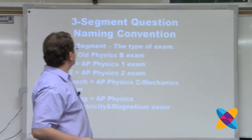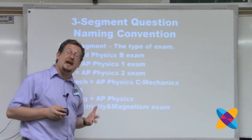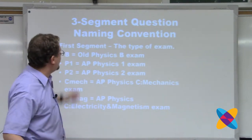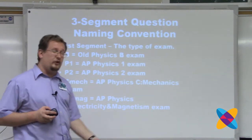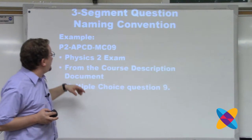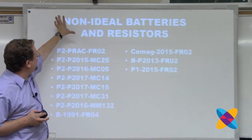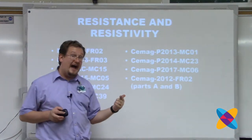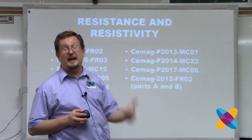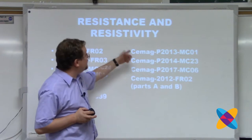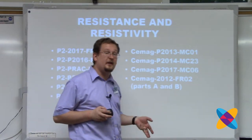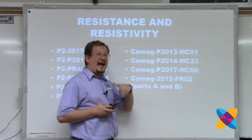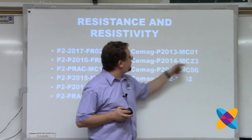Now, topics that show up a lot on the exam. If you've already seen the three-segment naming convention in another module, feel free to skip ahead. If you're doing modules out of order, you'll need to see this. What you're about to see is a discussion of different topics that show up a lot on the exam, each with a set of example questions to help you understand what it looks like on an AP Physics II exam. Even C Mechanics or C E&M exams sometimes ask questions the same way as Physics II. Each question is shown as a three-segment identifier separated by dashes.